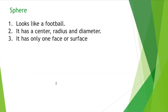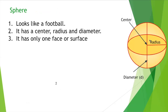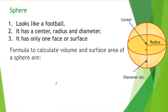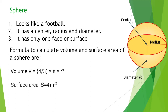A sphere looks like a football or a tennis ball. It has a center, radius, and diameter, and only one face or surface. The radius goes from the center to any point on the surface, and the diameter goes from one side to the other through the center — it is double the radius. Volume equals 4 over 3 pi r cubed, and surface area equals 4 pi r squared.